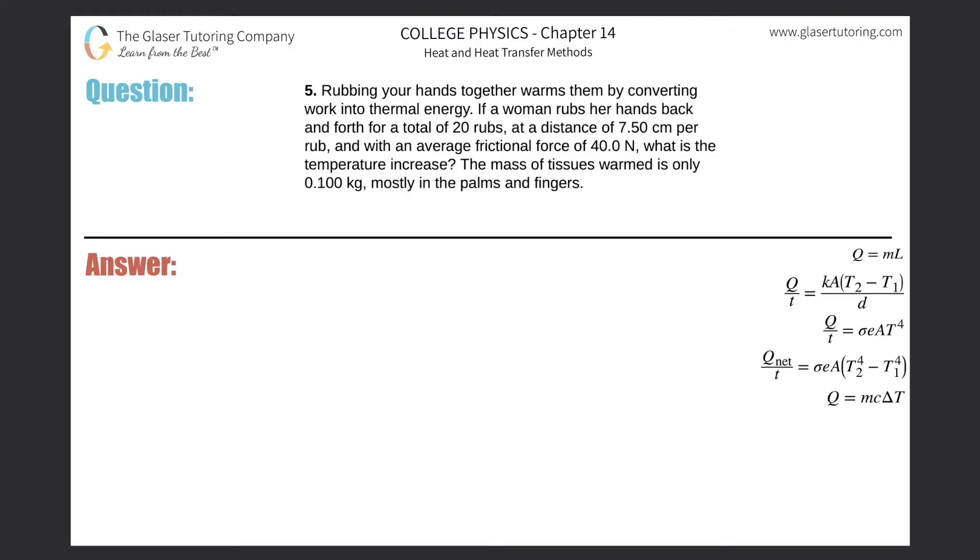Number five: rubbing your hands together warms them by converting work into thermal energy. If a woman rubs her hands back and forth for a total of 20 rubs at a distance of 7.5 centimeters per rub with an average frictional force of 40 newtons, what is the temperature increase? The mass of the tissues warmed is only 0.1 kilograms.